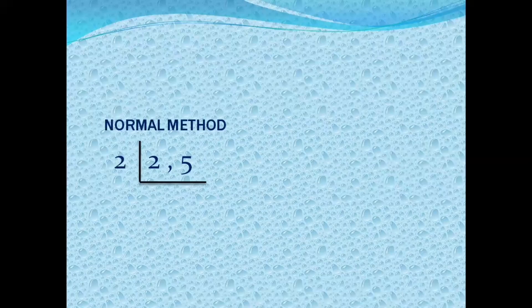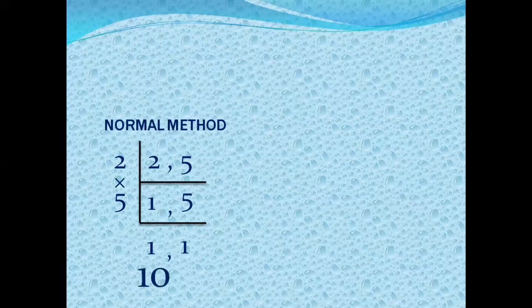Next question: LCM of 2 and 5. Normal method — 2 divides 1 time, but 5 cannot be divided by 2, so it remains same. 3 can't divide either. Moving to prime number 5: 5 divides 5 one time. Then 2 and 5 should multiply to give 10. That is the normal method.